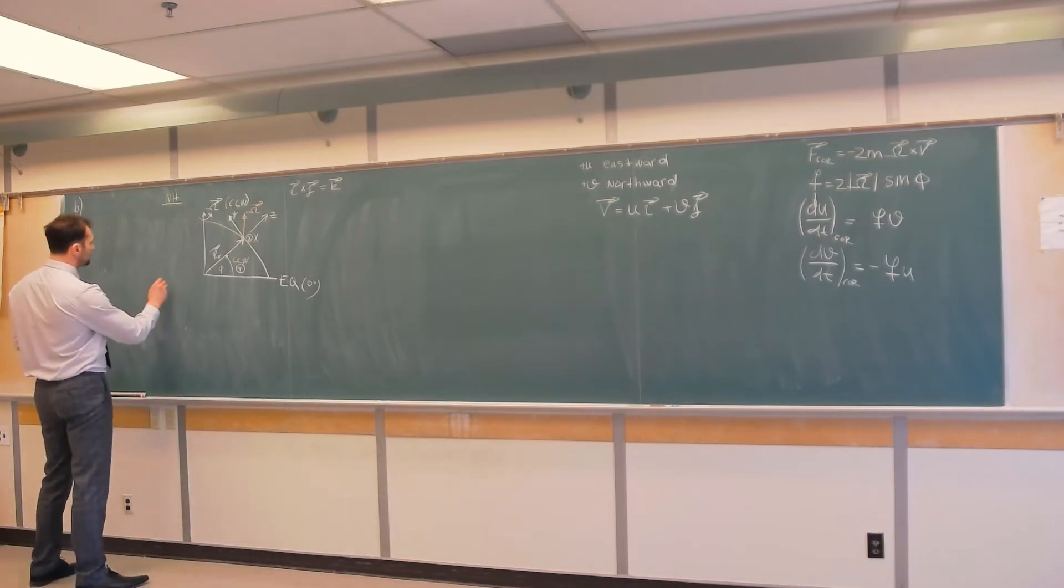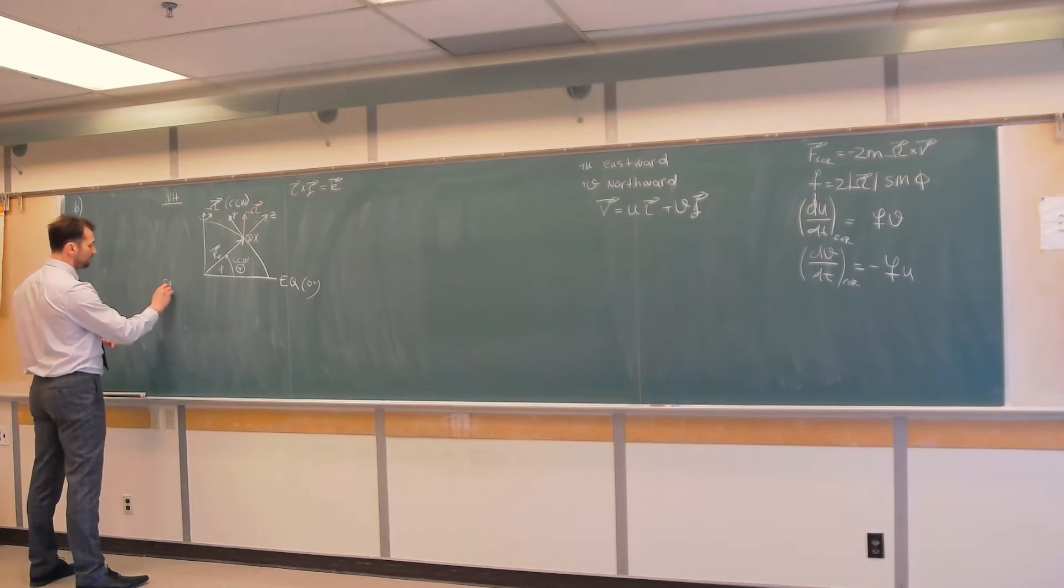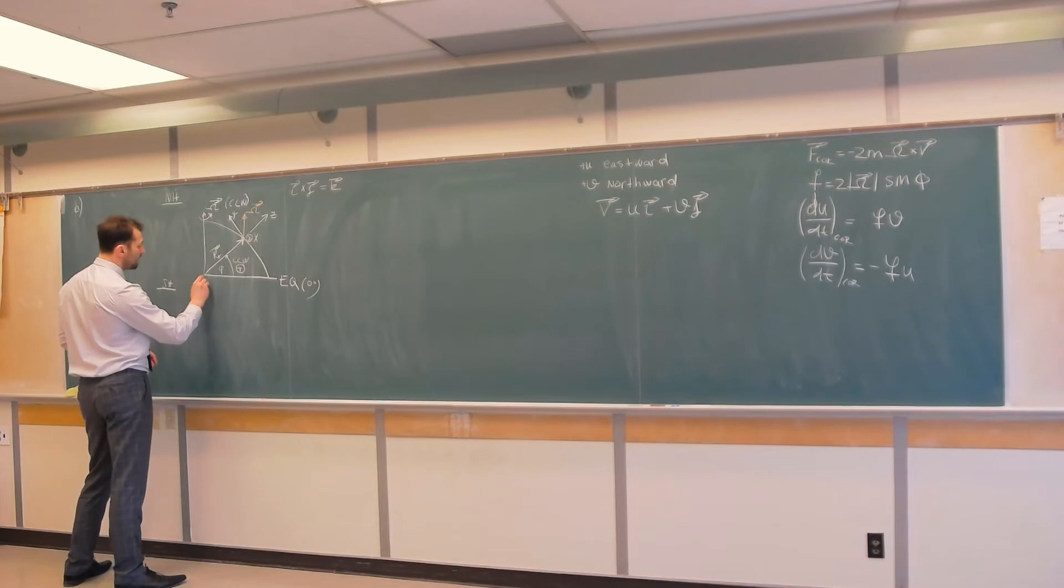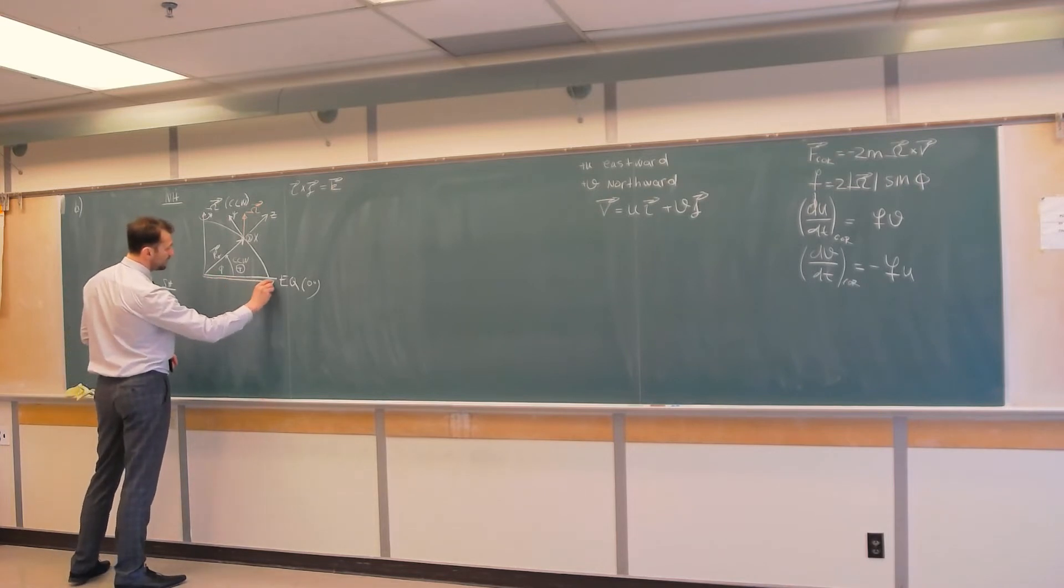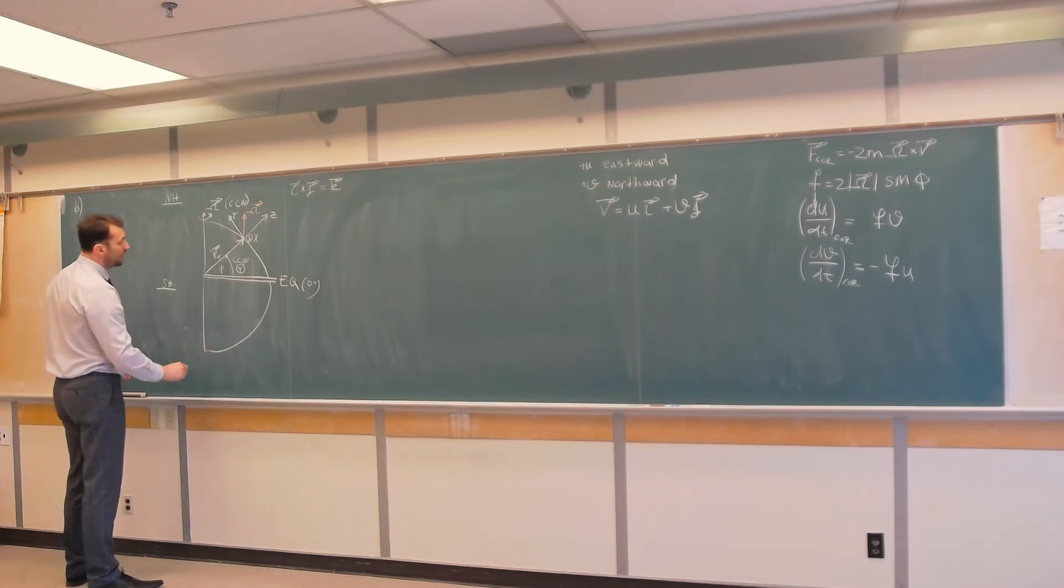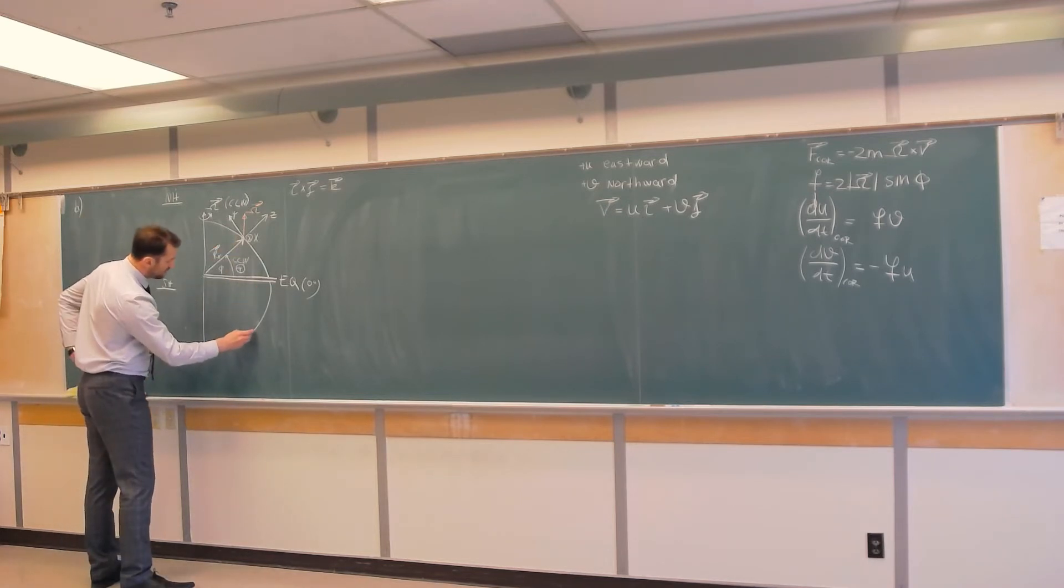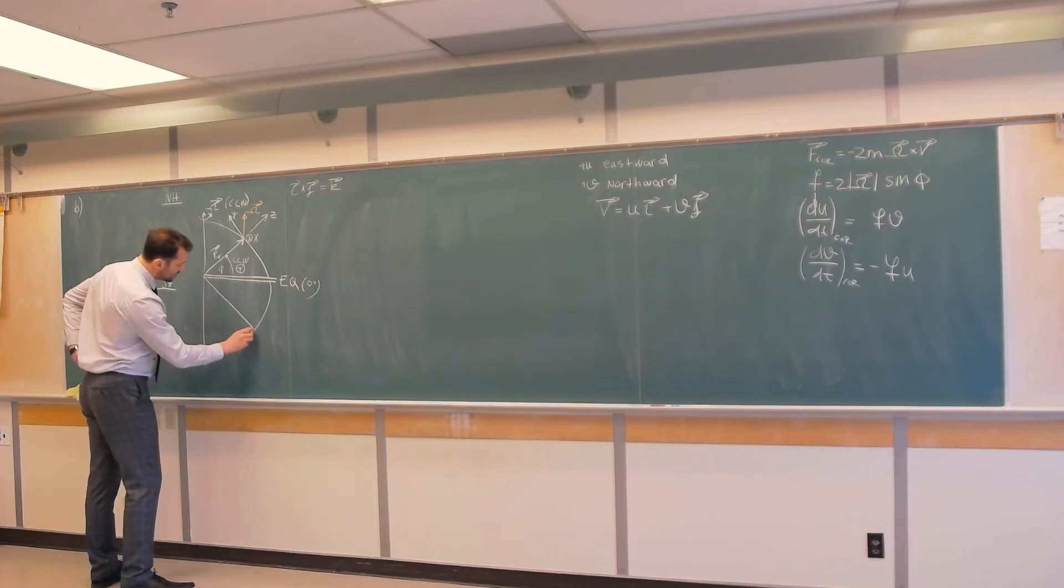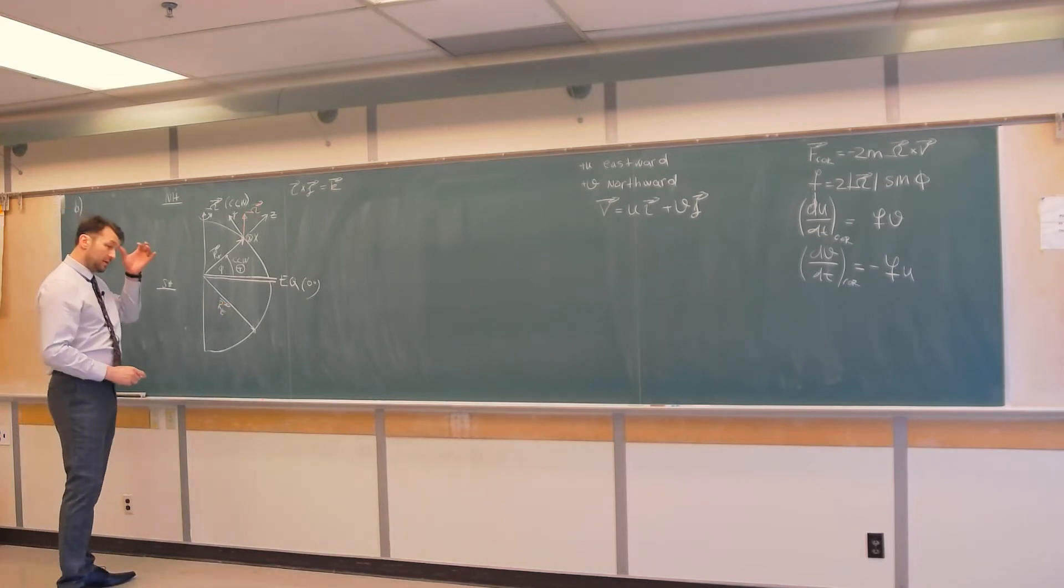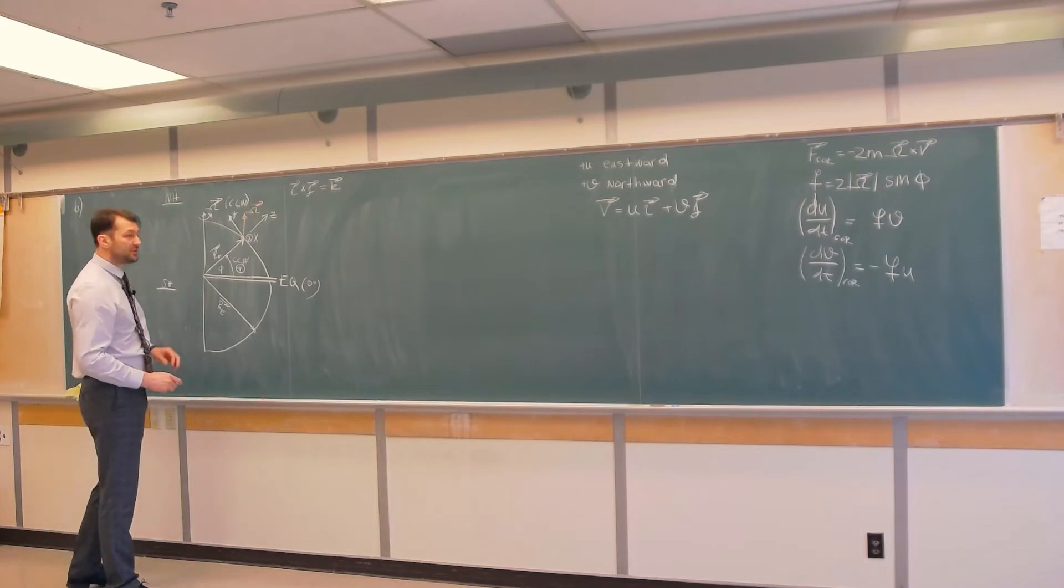Now, let's look at the southern hemisphere. Southern hemisphere, again, we have the equator, and let's take a point somewhere here. We have the same radius of Earth, which, by the way, is about 6,400 and something kilometers.